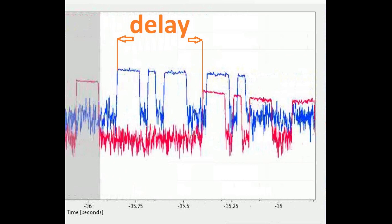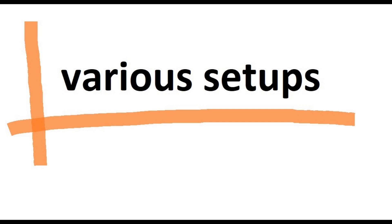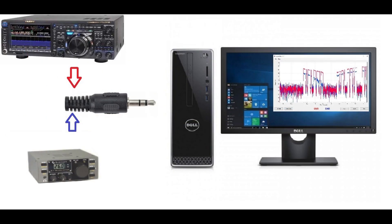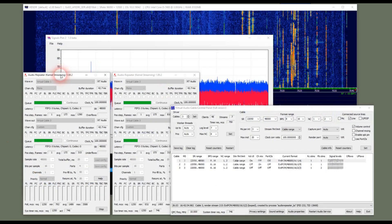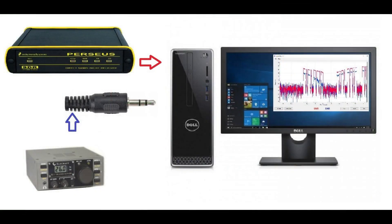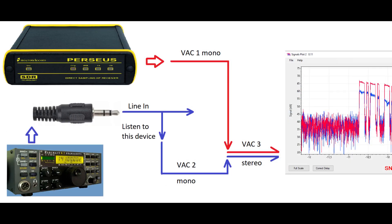The two receivers don't have to be identical. Actually, there may be quite a large — up to one second — delay between them. Let us look at possible setups. First, two traditional receivers: the audio signals are fed to the left and right inputs of the computer's sound card. Second arrangement: two software-defined radios — in this case, virtual audio cables will come useful. A third layout, mixed: one traditional receiver and one software-defined. Here you will also need virtual audio cables.